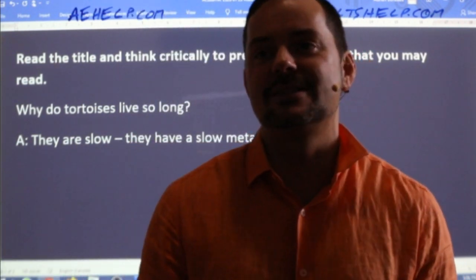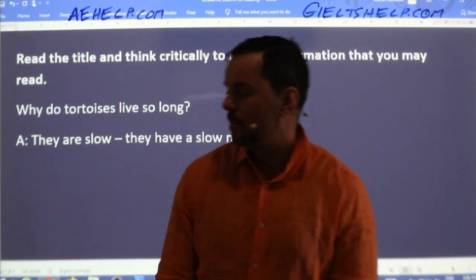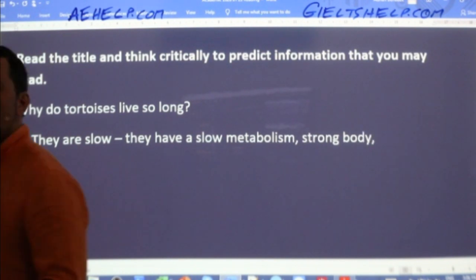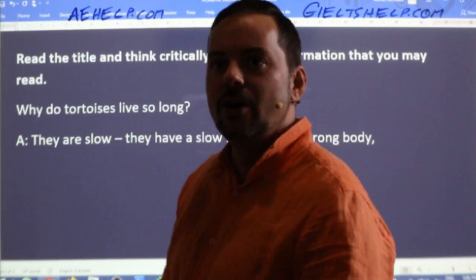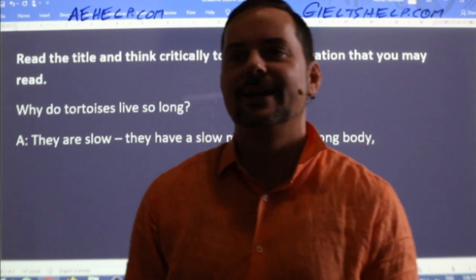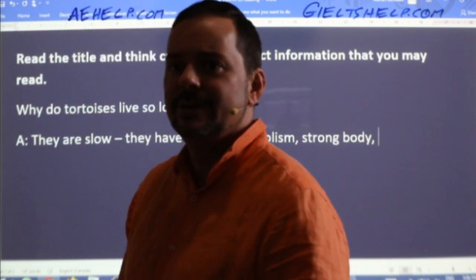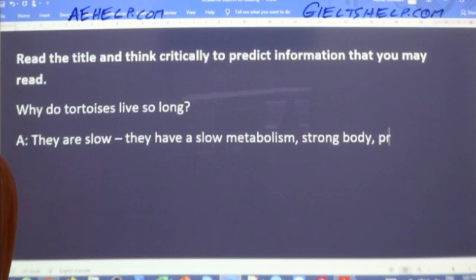Ferdav says metabolism is slow. Hany Grewal says they have a strong body. What does a turtle have on its back that protects it from harm? It's called a shell — strong body, protective shell maybe. Latifah, it's a tortoise shell in this case.